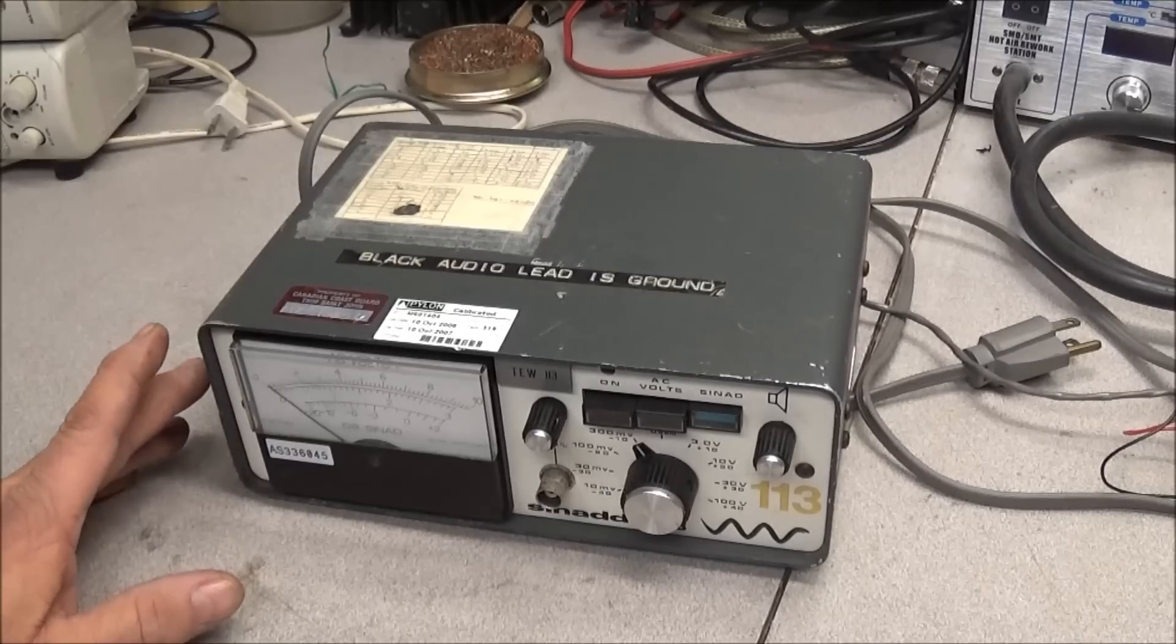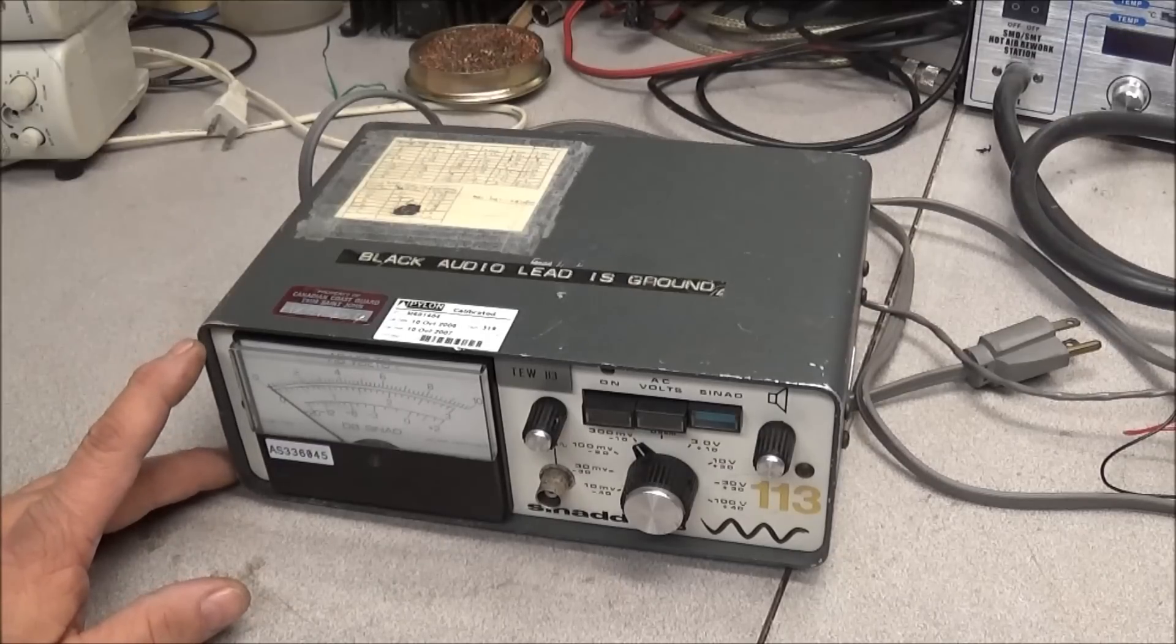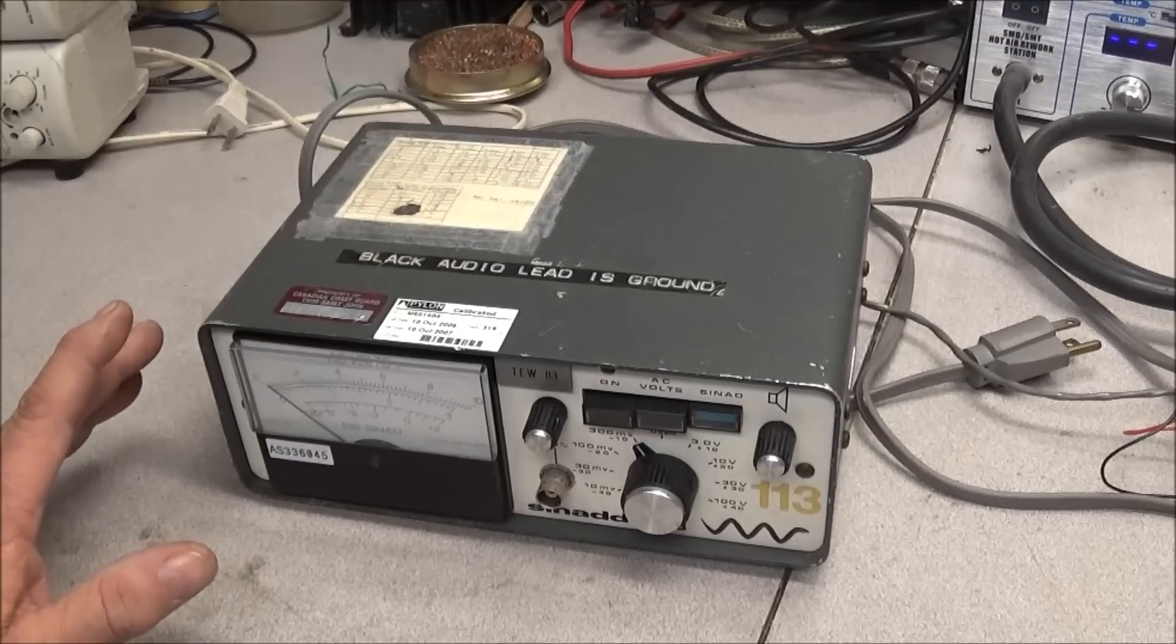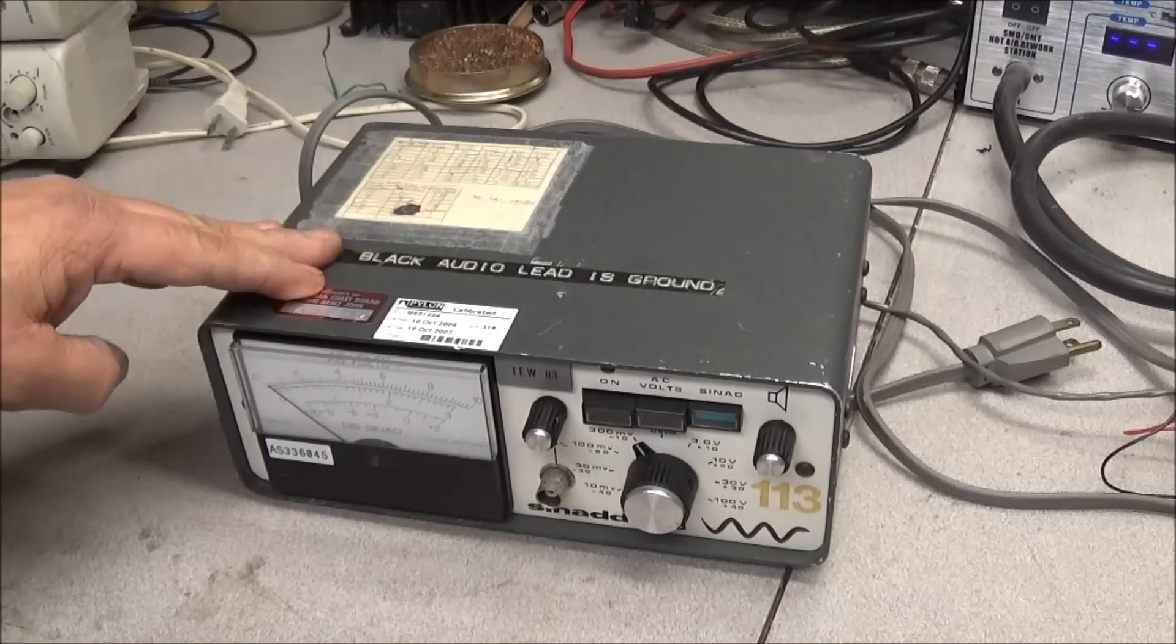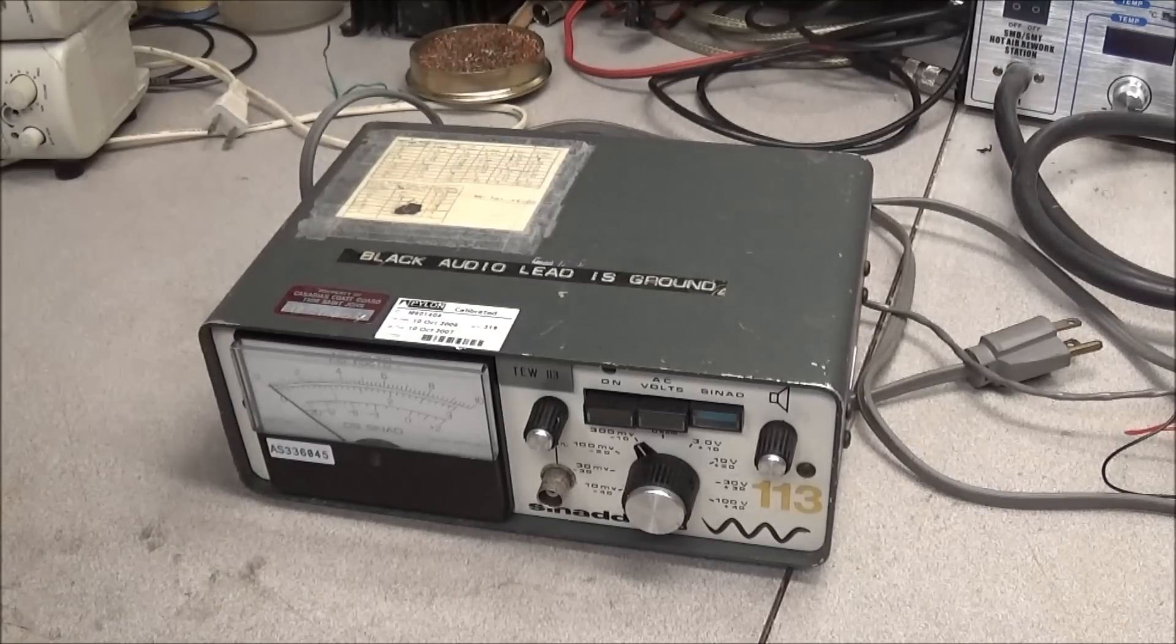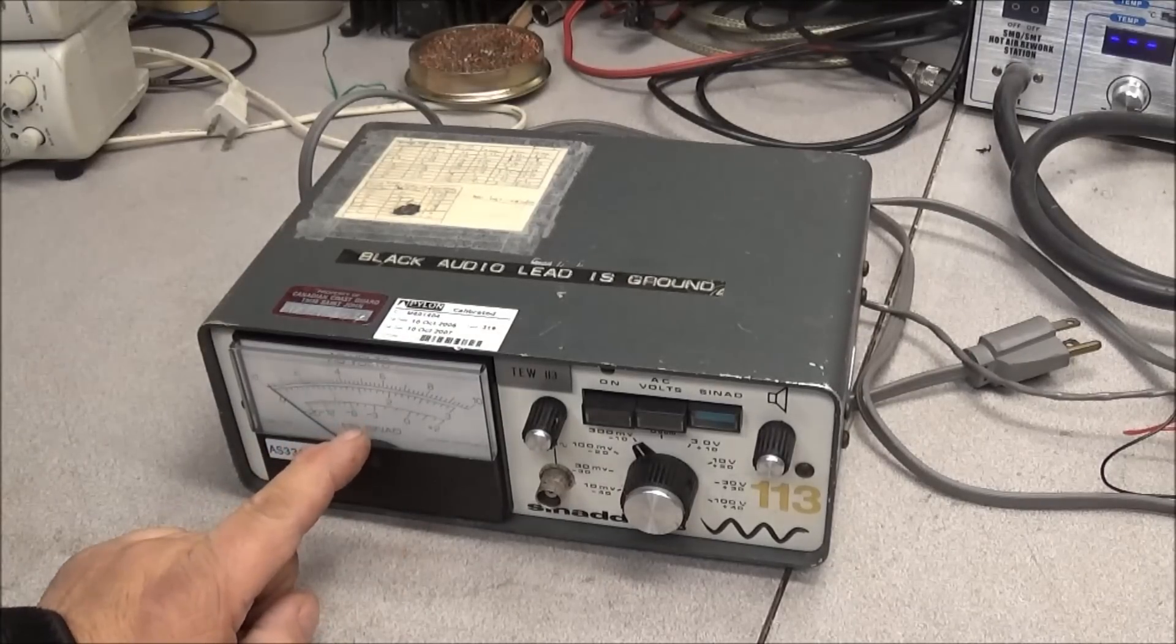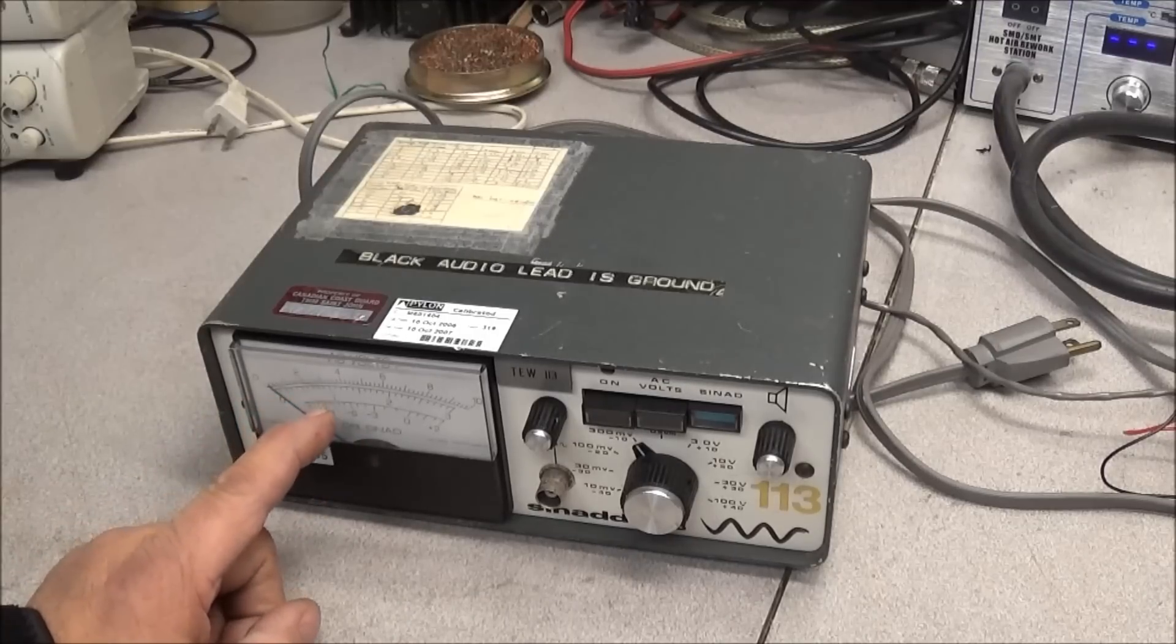The idea of it is to adjust the receiver so you got more signal. Now you just can't peak it by the meter because the meter will also peak out on noise, so you kind of got to listen and watch the meter at the same time. With the SINAD and with the unit built in to the IFR, it filters out the noise so what you're seeing on the meter is going to be signal.